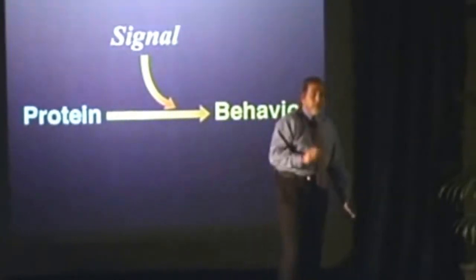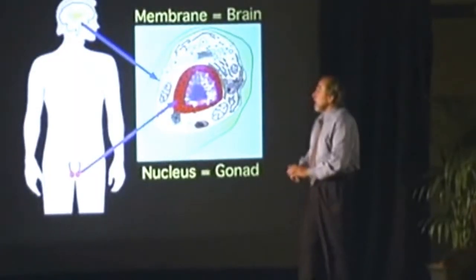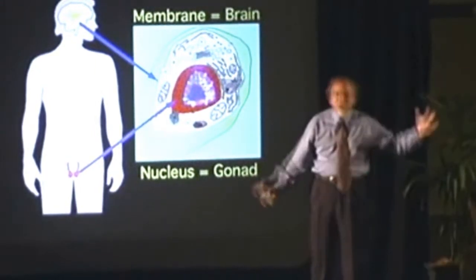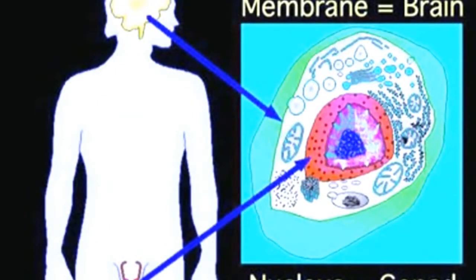Here's the point. The brain of the cell is the structure that controls the signals to tell the cell what to do in response to the environment. The brain of the cell is the skin of the cell, the membrane. It's the same as your skin.